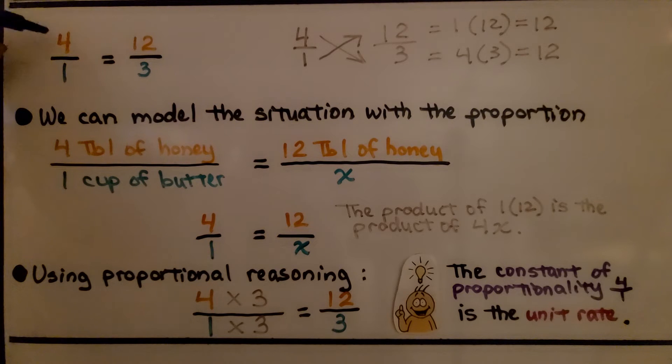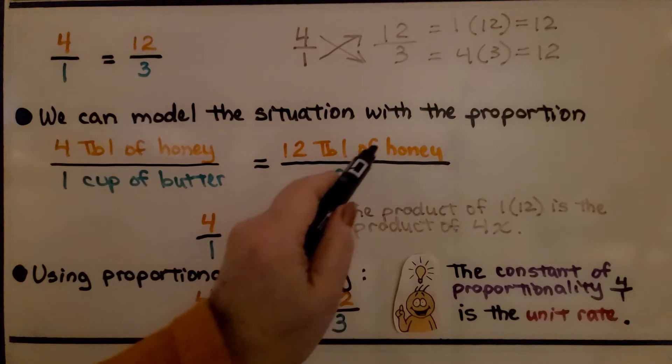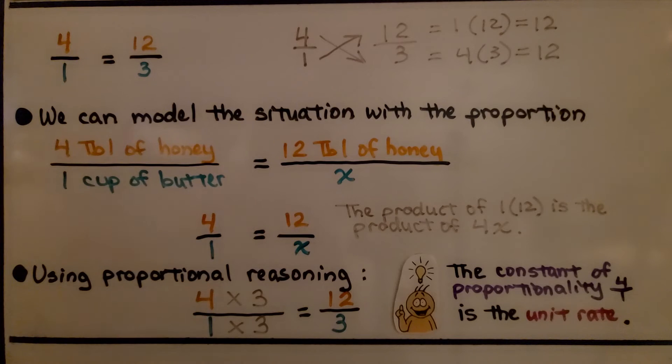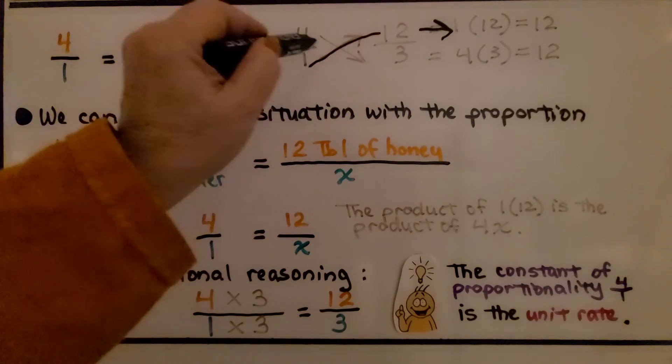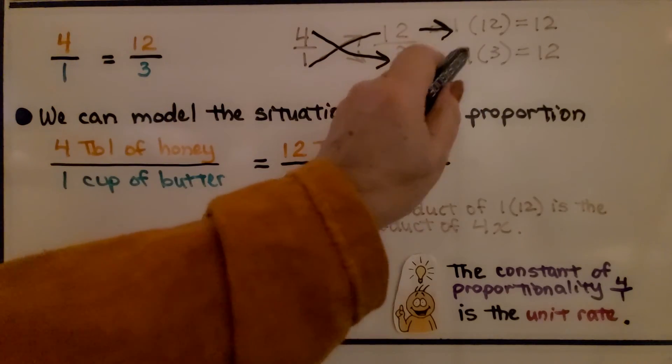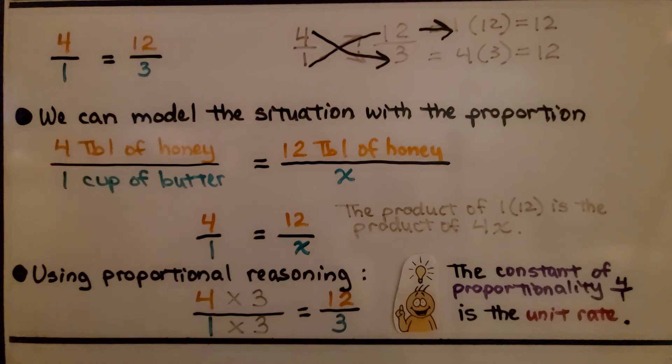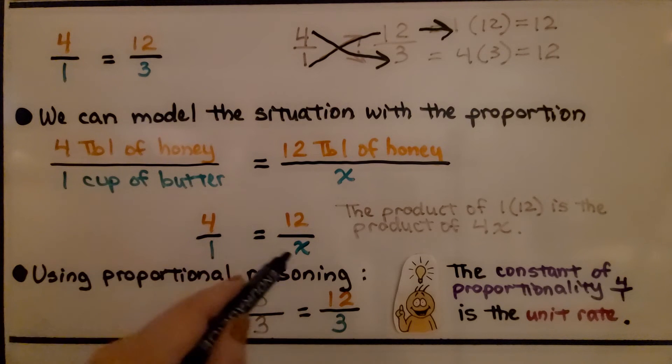We had 4 to 1 is equal to 12 to 3. 4 tablespoons of honey for each 1 cup of butter is equal to 12 tablespoons of honey for 3 cups of butter. We can model the situation with the proportion 4 tablespoons of honey to 1 cup of butter is equal to 12 tablespoons of honey to x. If you remember, we can do cross multiplication. If we have 1 times 12, then 4 times x will need to be equal to that. And that would be 4 times 3, so we know x is 3. The product of 1 times 12 is the product of 4x.